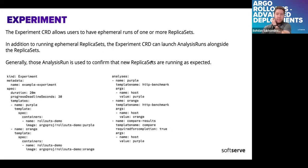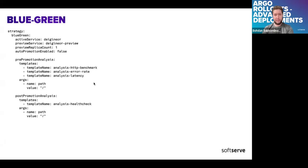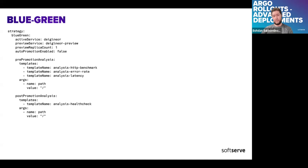Blue-green is an extension of the rollout manifest. Blue-green has fewer abilities compared to canary - it can only run analytics before traffic switch and after traffic switch; you cannot finely control what happens during deployment. Let's move to the actual demo.